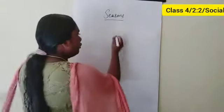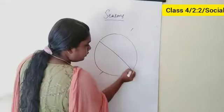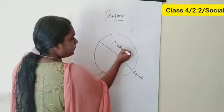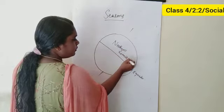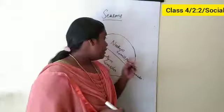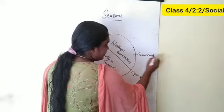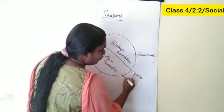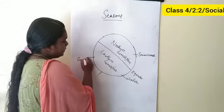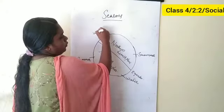The earth is tilted to one side. Here is our equator, and the equator divides the earth into two halves — the northern hemisphere and southern hemisphere. When the northern hemisphere experiences summer, the southern hemisphere has winter. Similarly, when the southern hemisphere experiences summer, the northern hemisphere has winter.